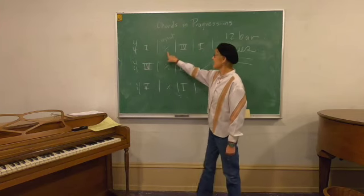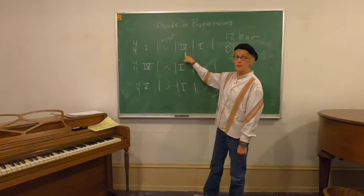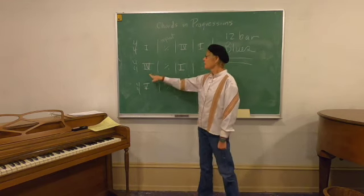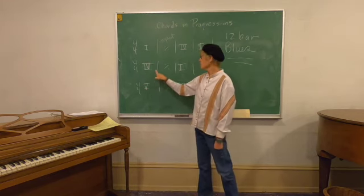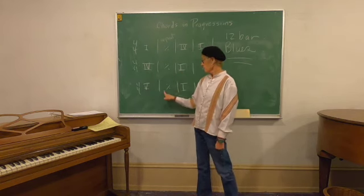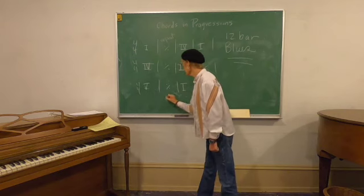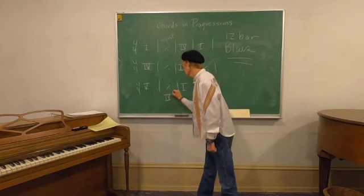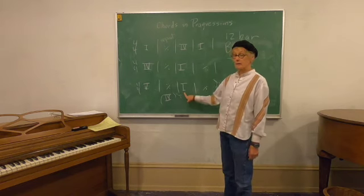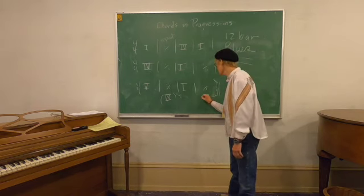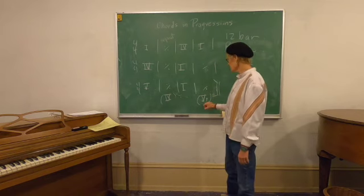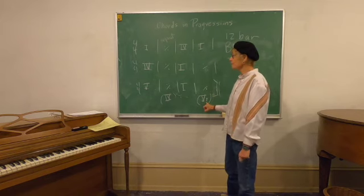This little sign means repeat the last measure. What we have is the tonic chord for two measures, then we move to the subdominant chord, then back to the tonic chord. We come back to the four chord for two measures, back to the one chord for two measures, the five chord for two measures — sometimes this comes back to a four — and back to the tonic chord, sometimes back to the five, particularly in its seventh form.